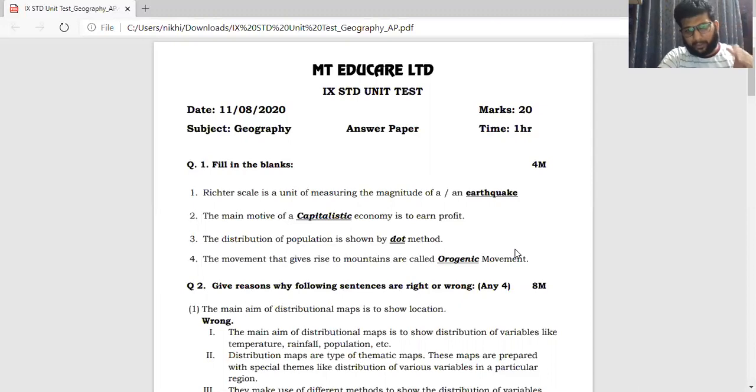Now children, when you are writing down these 4 statements and the answer, that is when you score full 4 marks. Please ensure that you will write down the complete statements. Let's come to the very next question. Give reasons why following statements or sentences are right or wrong. Any 4 had to be attempted out of all the questions given to you. It was an 8 mark question.